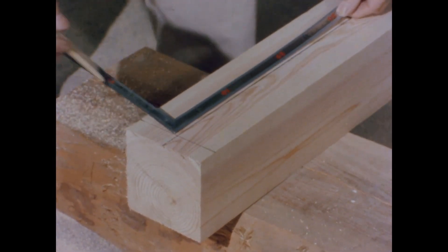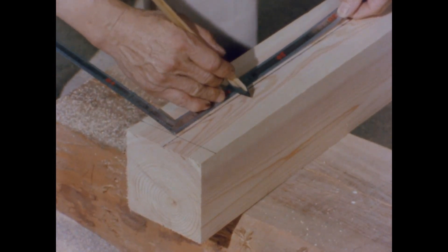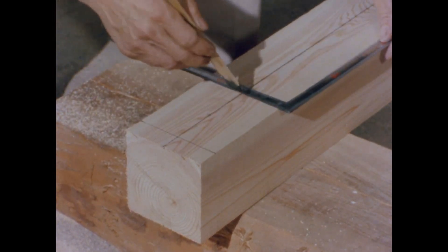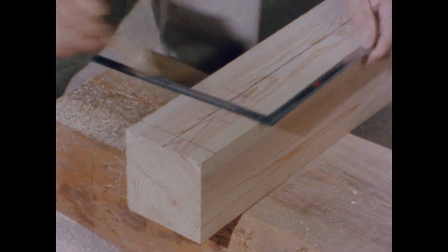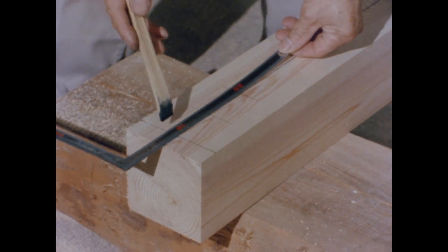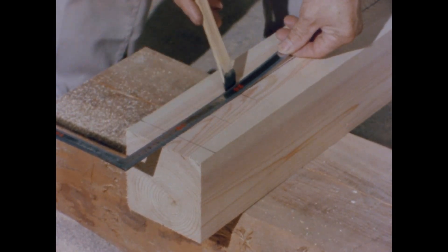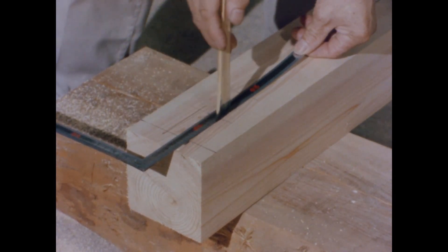Start marking from the grooved part Meggie. Use the width of the Sashigane to draw a line with a bamboo pen in the grooved part.